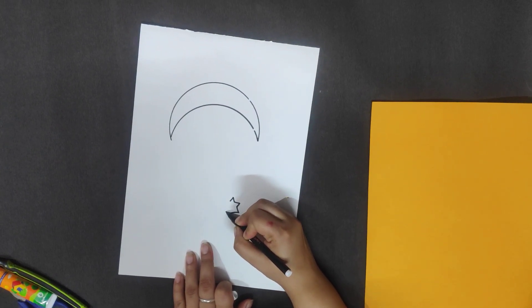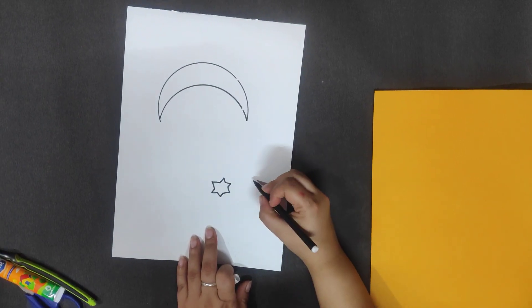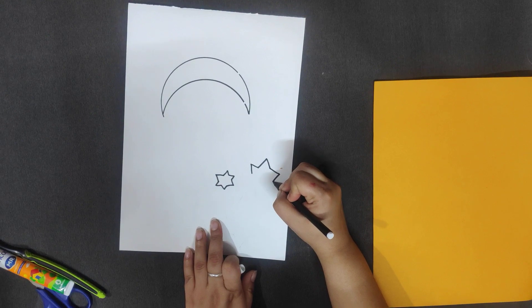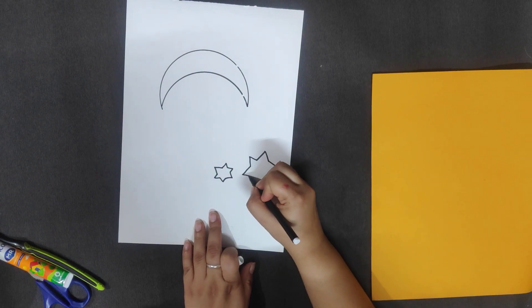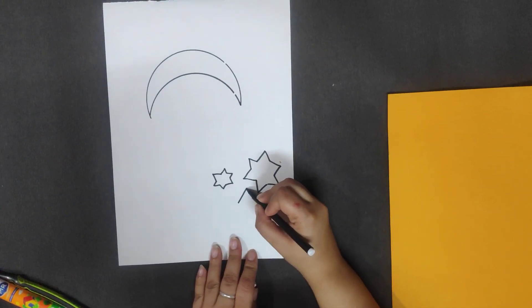After this we will draw three sizes of stars. First the smallest one, one a little big star, and one the biggest star.